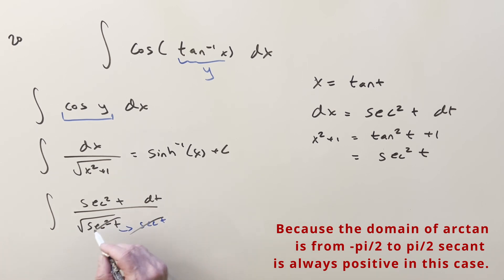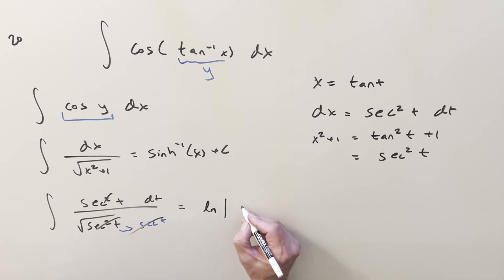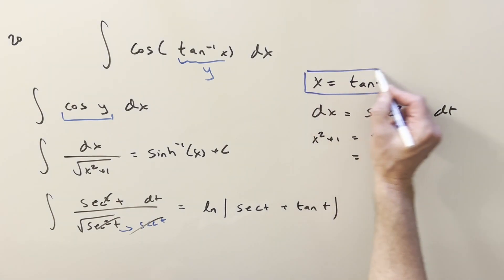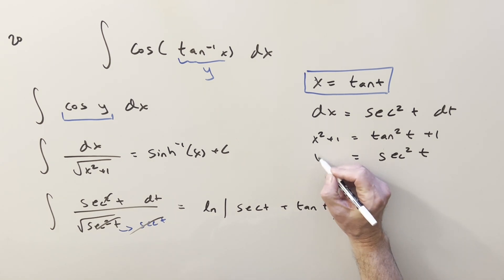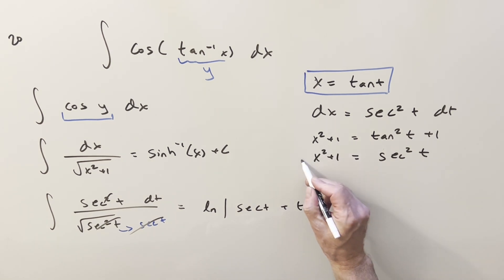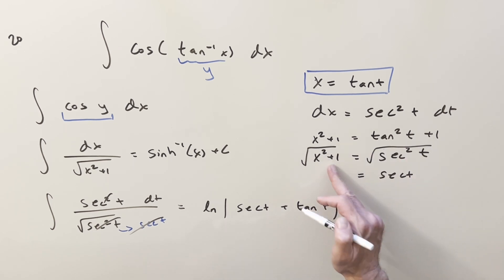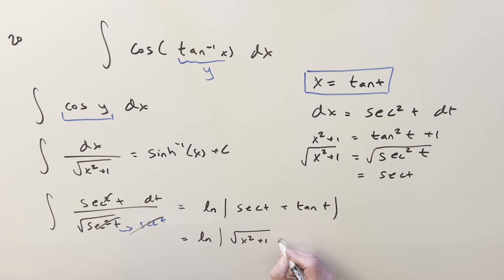We can cancel sec²(t) in the numerator with sec(t) in the denominator, leaving us just integrating sec(t). Using the formula, that gives us ln|sec(t) + tan(t)|. Now we back-substitute: tan(t) is just x. For sec(t), we note that x²+1 = sec²(t), so taking the square root, sec(t) = √(x²+1). Putting it together, we get ln|√(x²+1) + x| plus c.